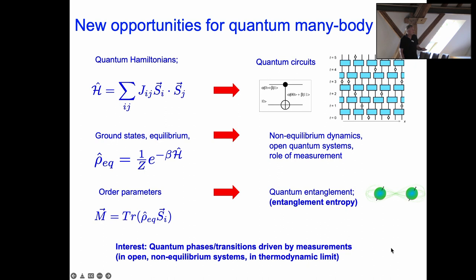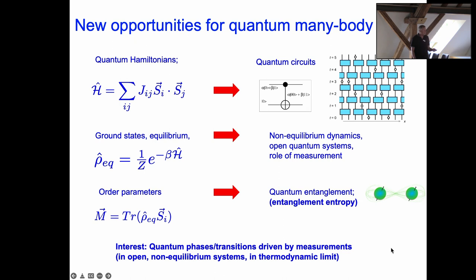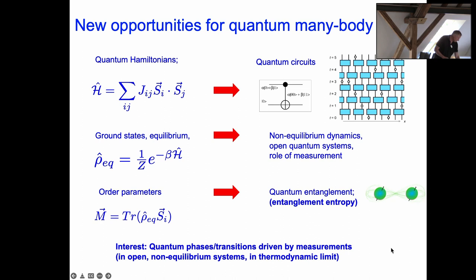In many-body theory, one often focuses on order parameters such as the magnetization m in a ferromagnet, or on topological phases — usually looking at ground states. In the context of many-body non-equilibrium systems, one might be looking at other quantum information quantities such as quantum entanglement and the entanglement entropy. The interest here are quantum phases and phase transitions driven by measurements in open non-equilibrium systems in the thermodynamic limit.